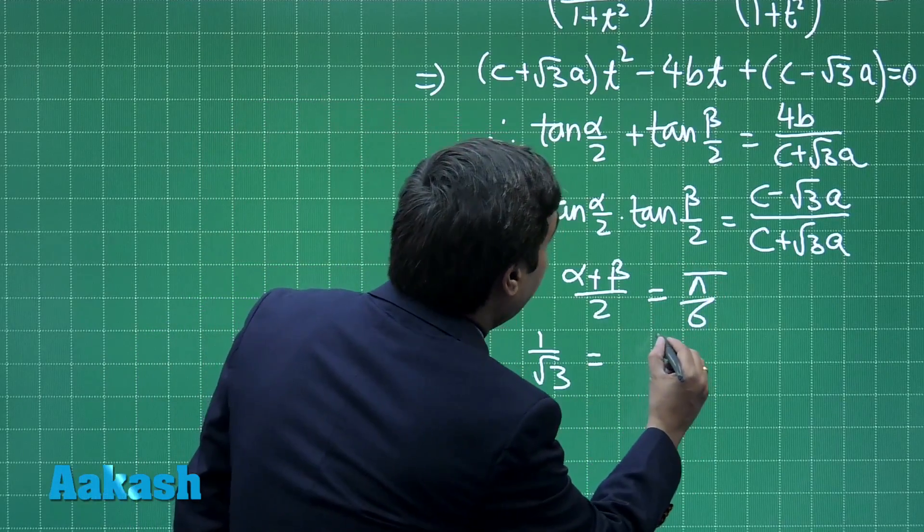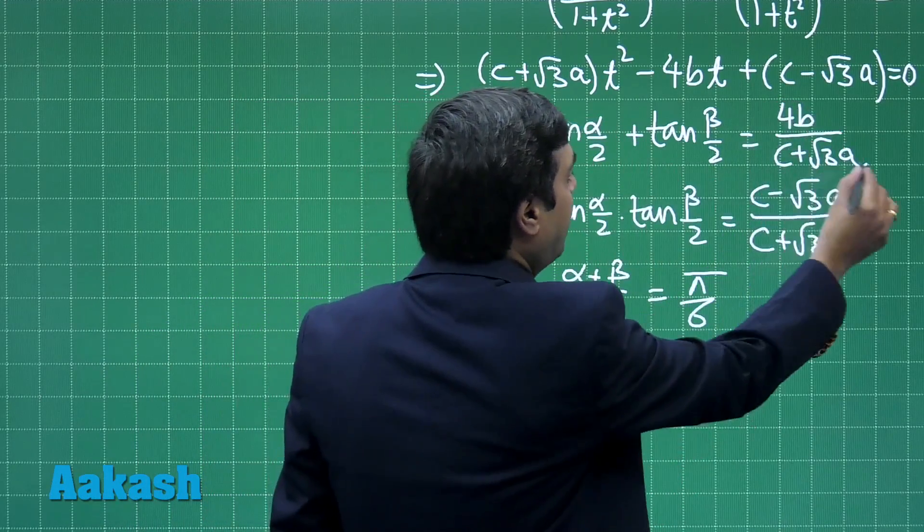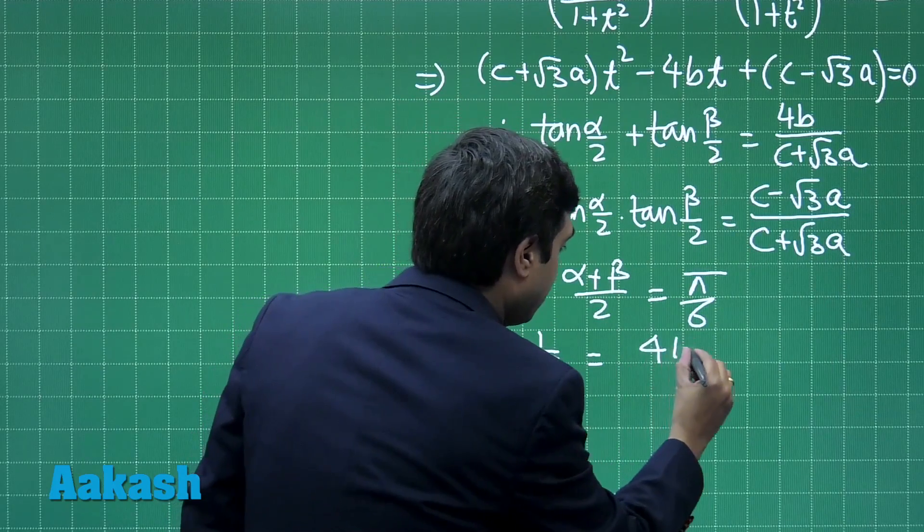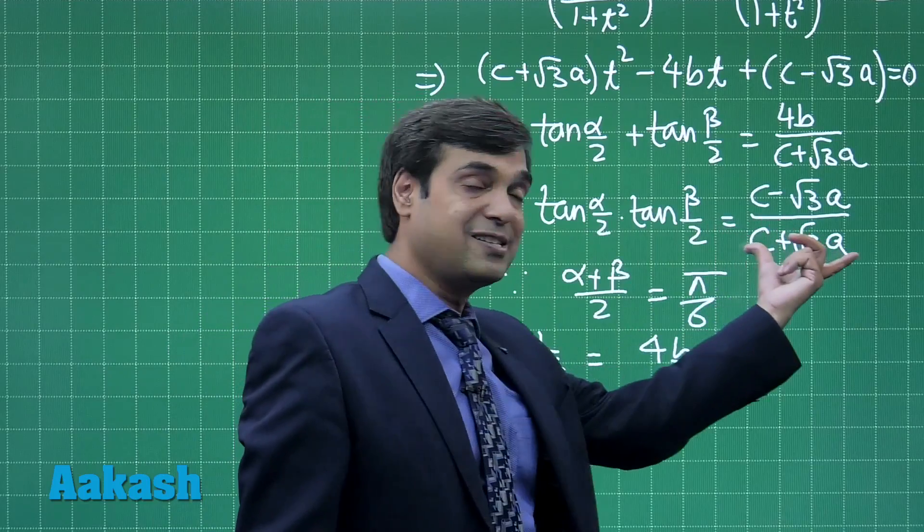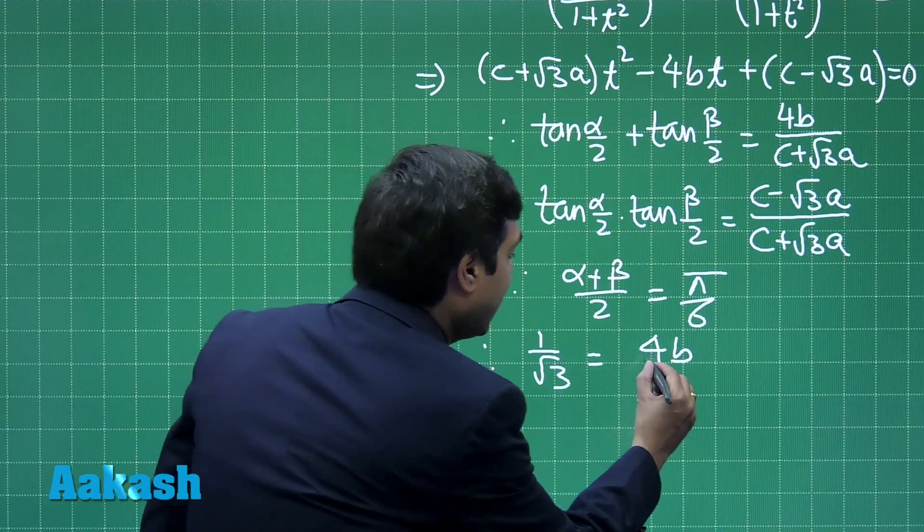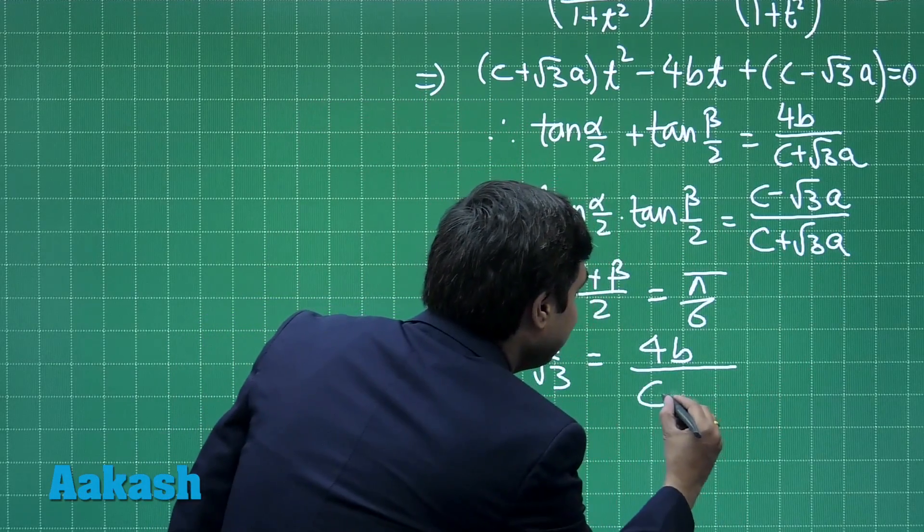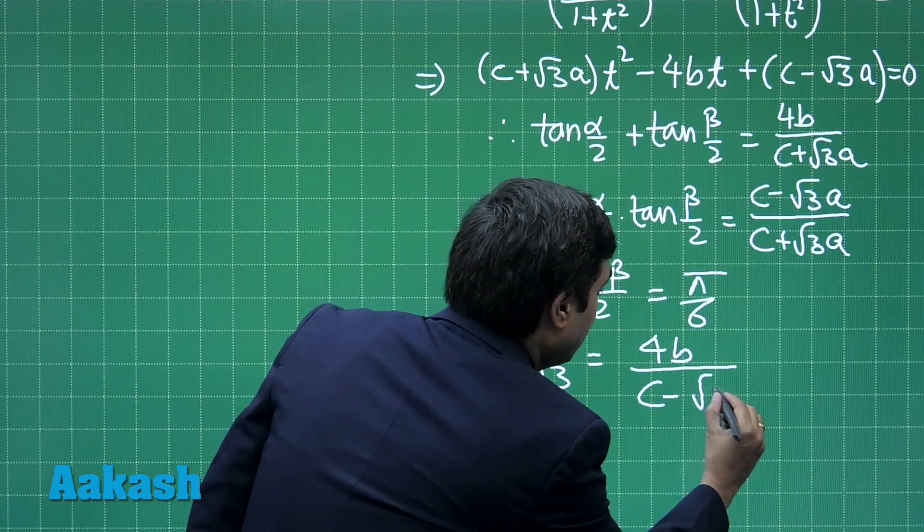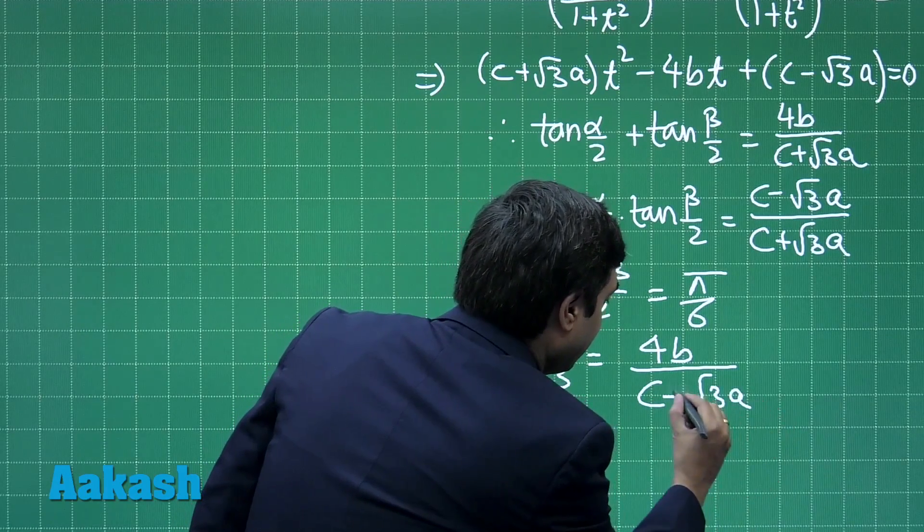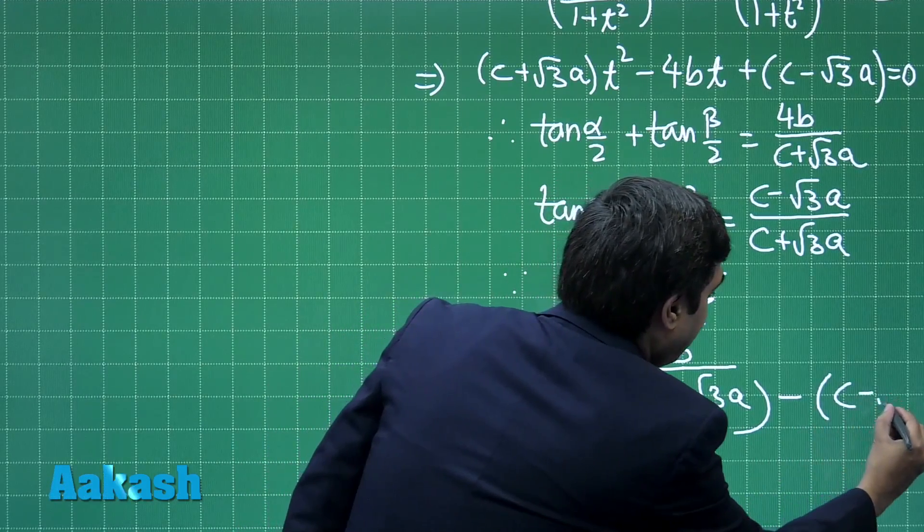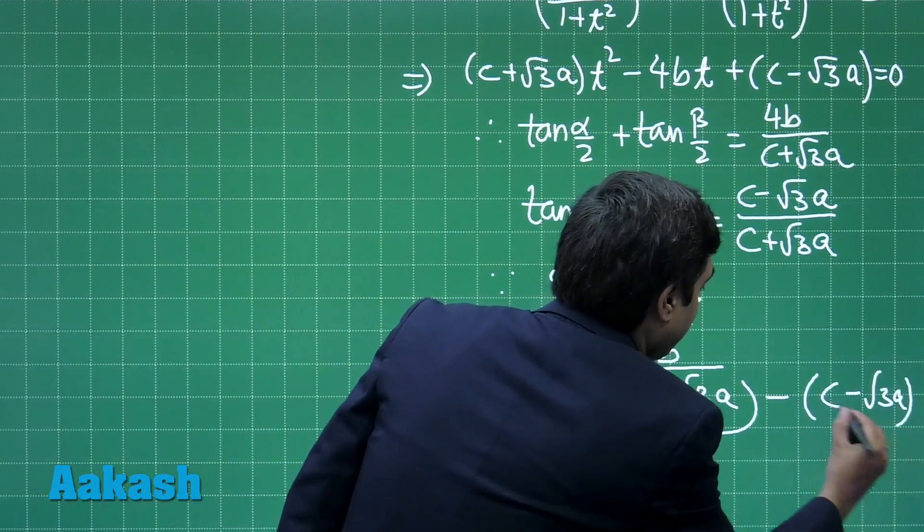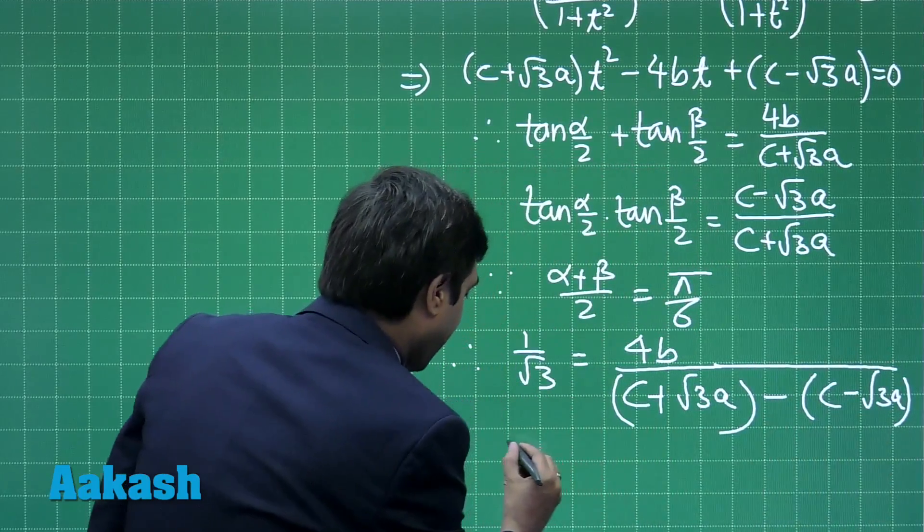we can write here 4B/(c + √3·A) divided by 1 minus this term. Taking LCM and we simply get 4B/[(c + √3·A) - (c - √3·A)].